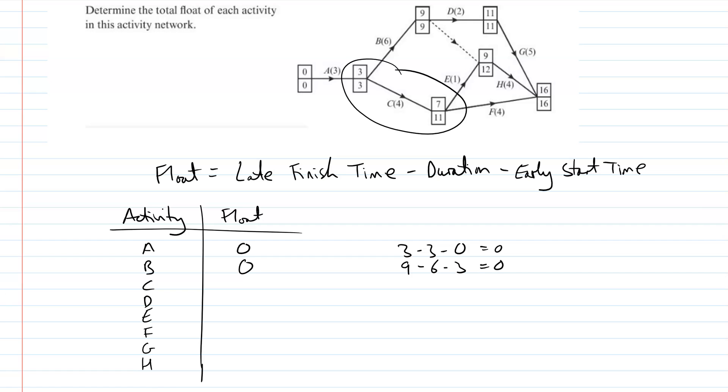C, we've already mentioned. C will have float. So the late finish time is 11, and we minus the duration of the start time, so minus four minus three gives us four. So C has got four days. We could delay it by four. We could start C at seven, and it'll still be finished by 11.